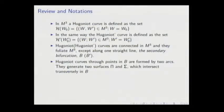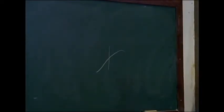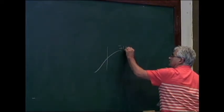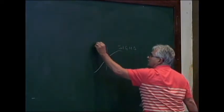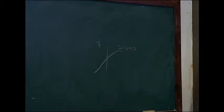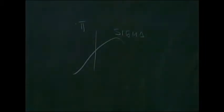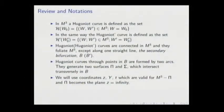This is something like sigma — surface sigma and surface pi. We will use coordinates z, y, and t, which are valid for M3 minus pi. Using these coordinates, pi becomes the plane z equal to infinity.